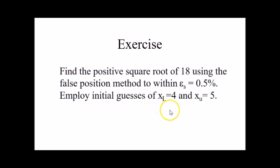The other one is this problem: Find the positive square root of 18 using the false position method to within es equals 0.5%. You need to employ initial guesses of xl equals 4 and xu equals 5.